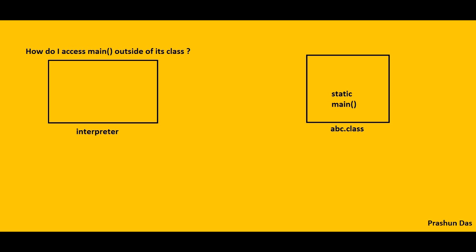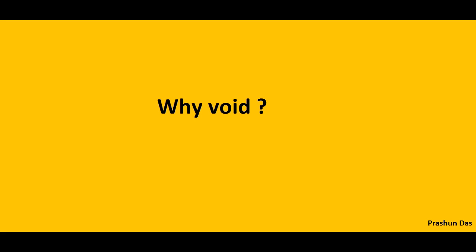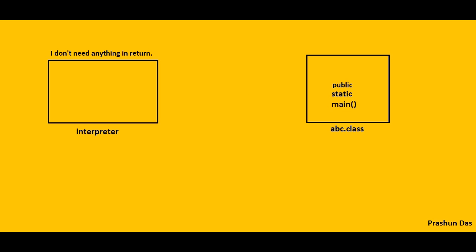The main method is also accessed by a piece of code which is outside the class in which it is declared. Hence, to have access to the main method, it has to be given the access specifier public, since public methods can be accessed from outside the class as well.